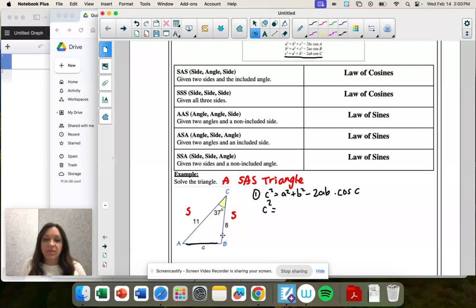So A is across from A. So A is 8. B is across from B. So B is 11. So 8 squared plus 11 squared minus 2. And then those repeat AB times cosine of angle C, which we have is 37.